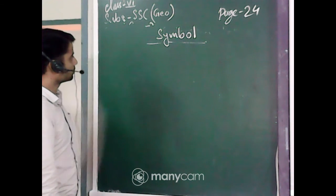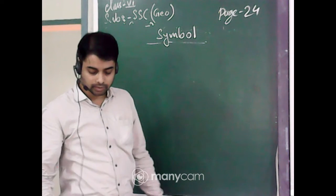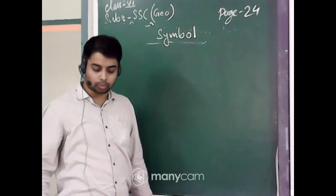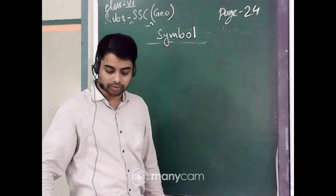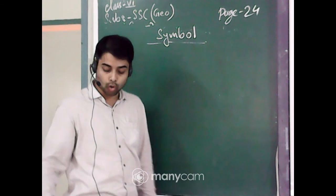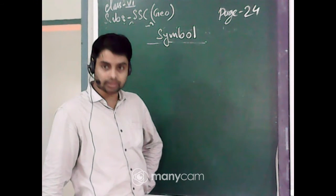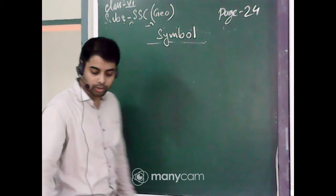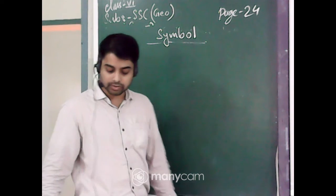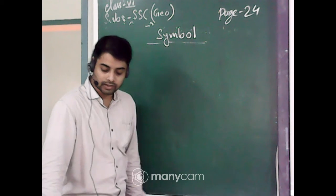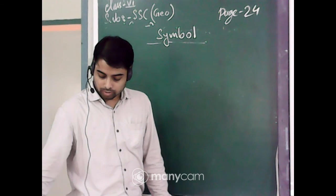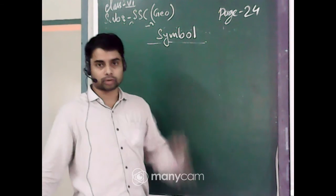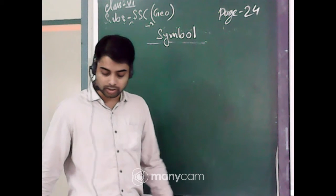Now we are going to discuss about symbol. Look at your book, page number 26. A symbol is another important component of a map. It is not possible to draw features like buildings, roads, bridges, trees, railway lines on a map in their actual shape and size. So they are shown by using certain letters, shades, colors, pictures, and lines. These are called conventional symbols.